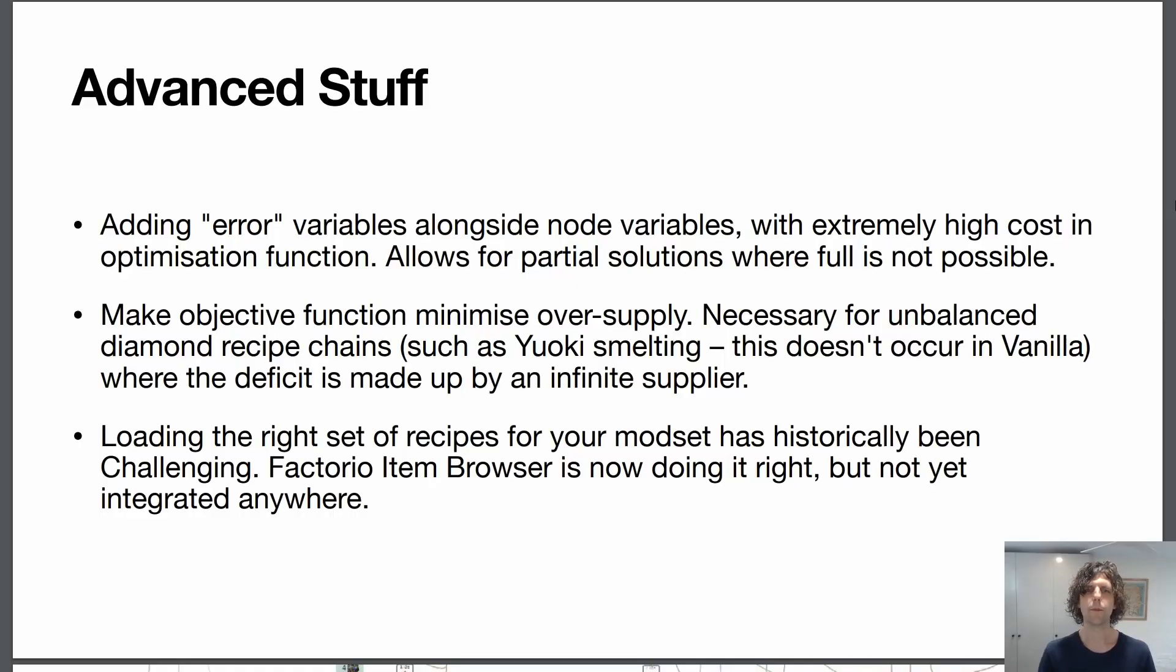The objective function that we set up only minimizes the production rate of nodes. It doesn't necessarily minimize oversupply. This is only necessary for unbalanced diamond recipe chains, such as in Yuoki smelting. You won't see this in vanilla. So if you're just playing around with it, this won't come up.